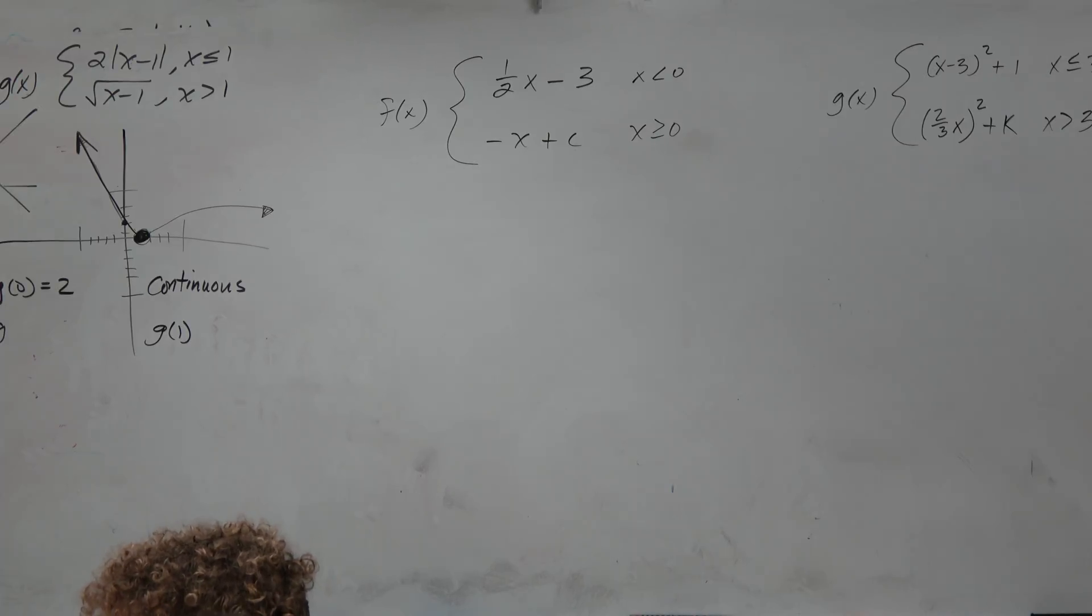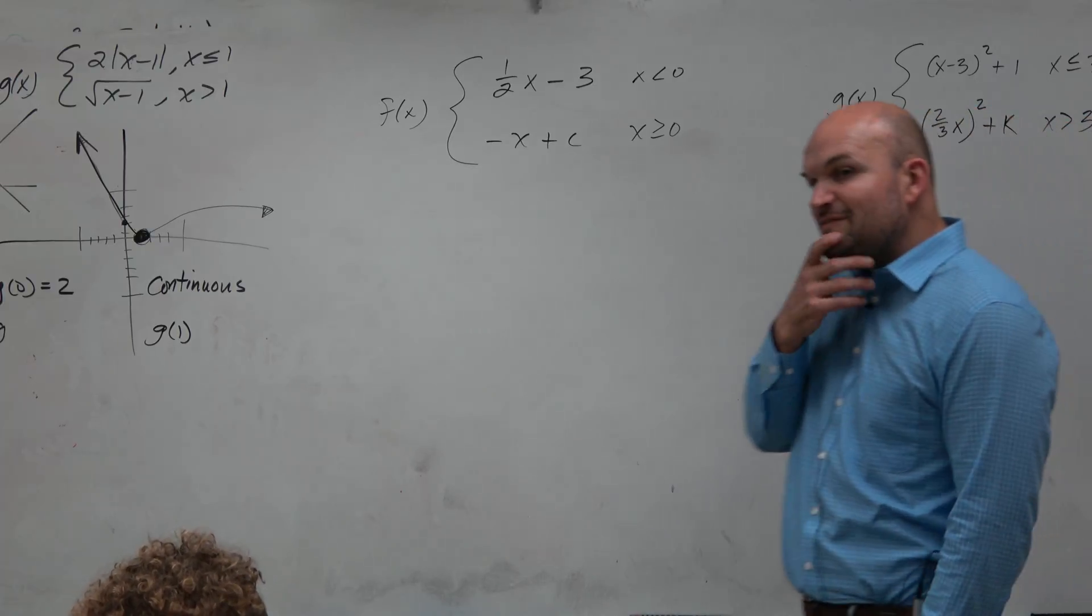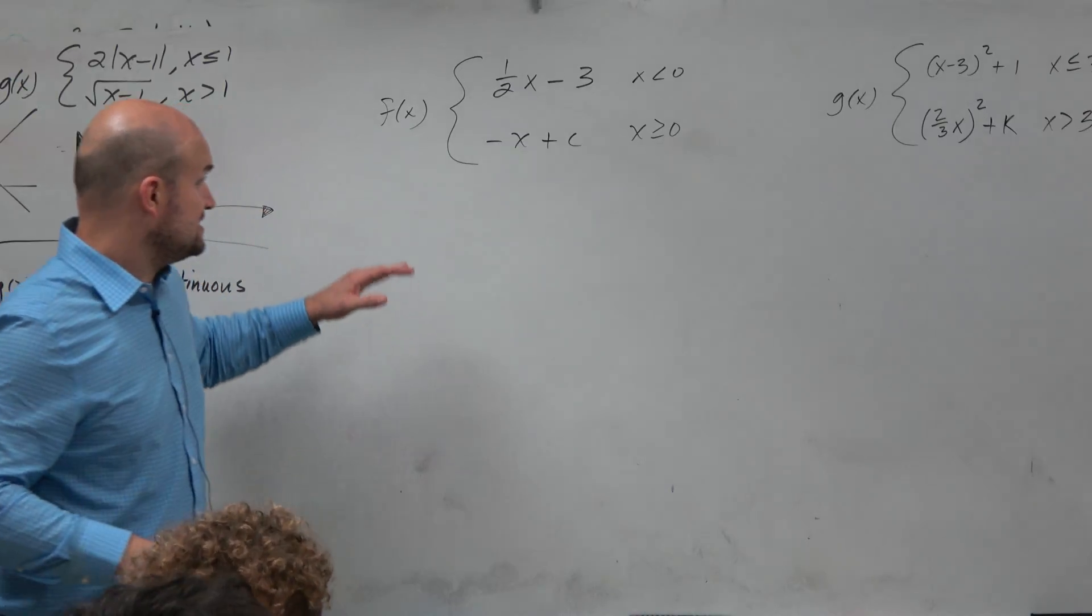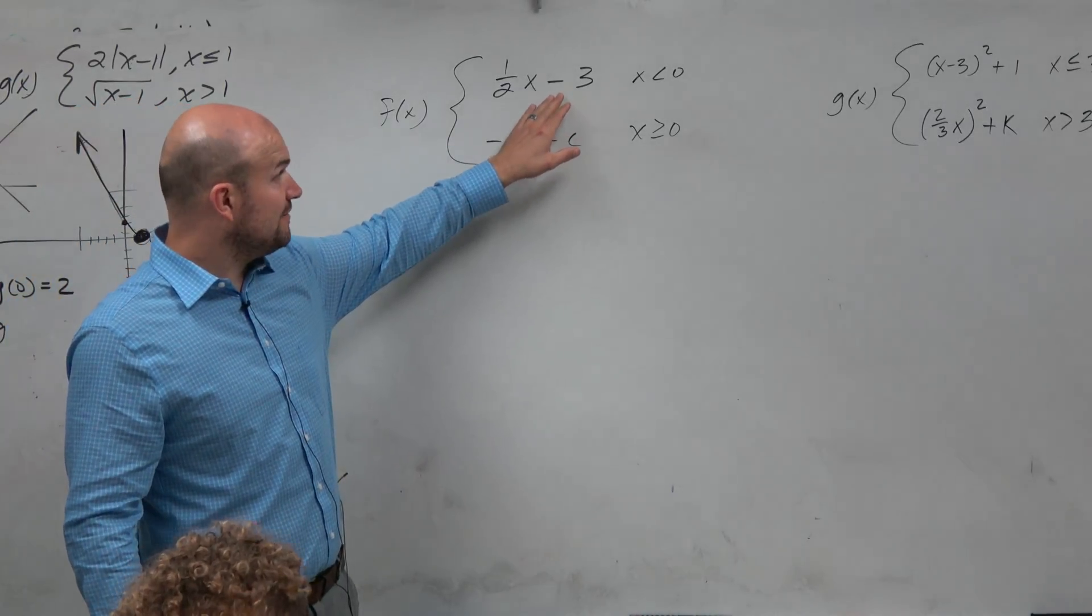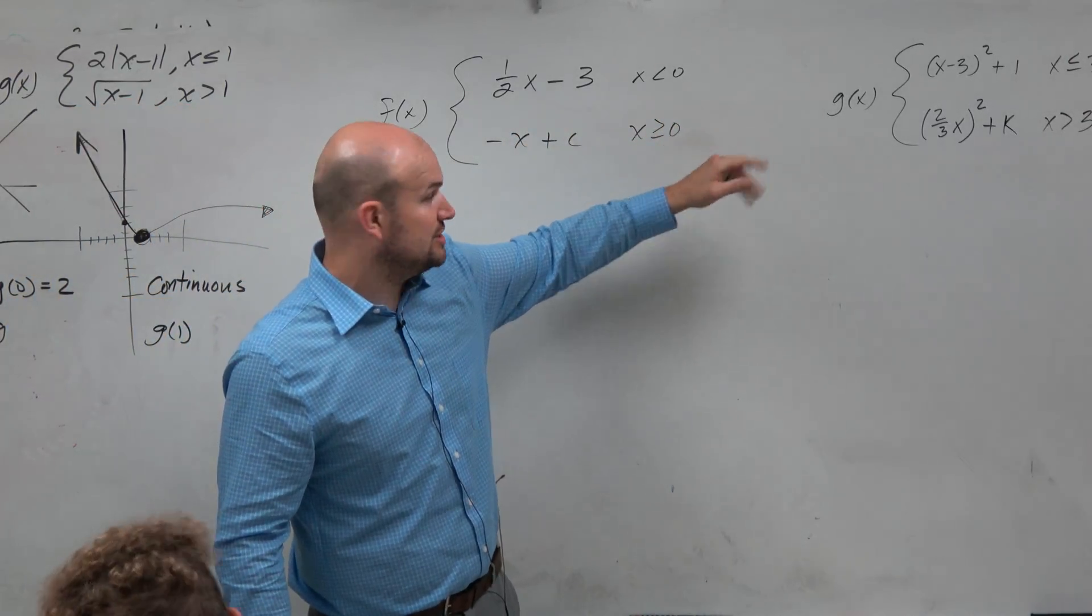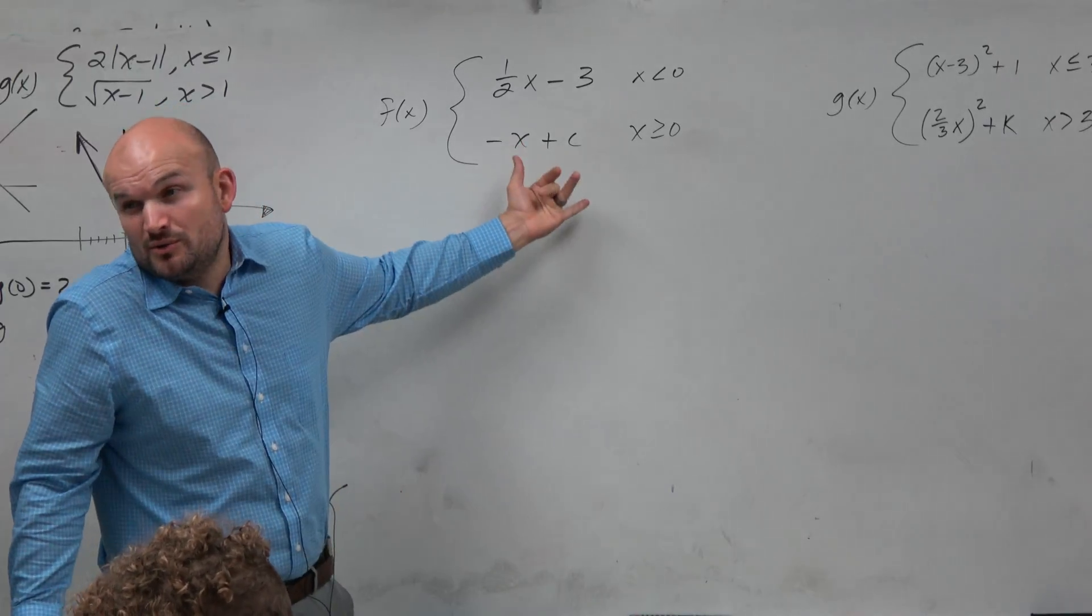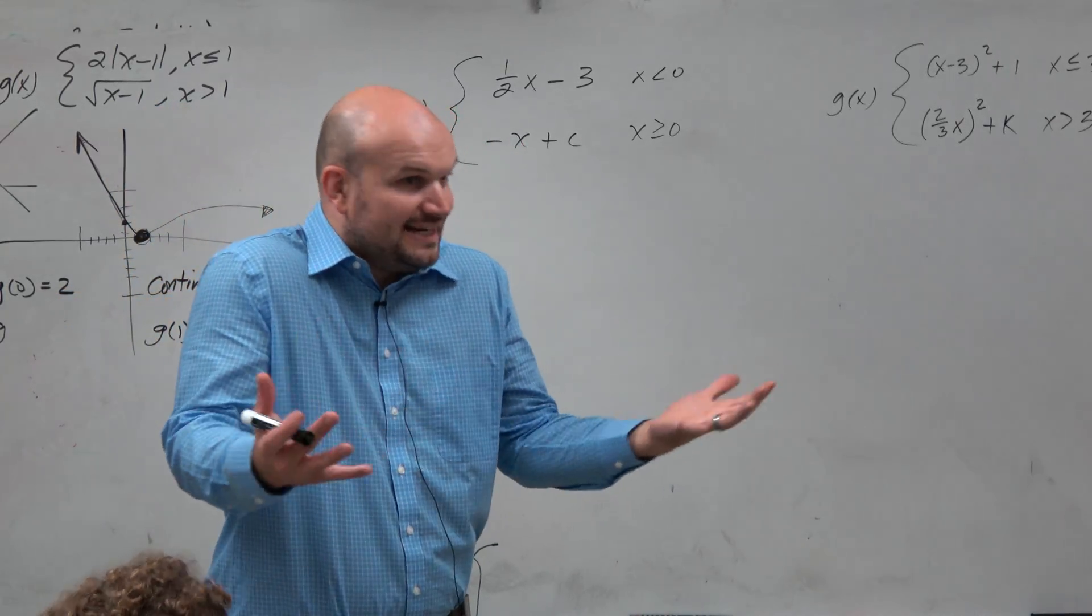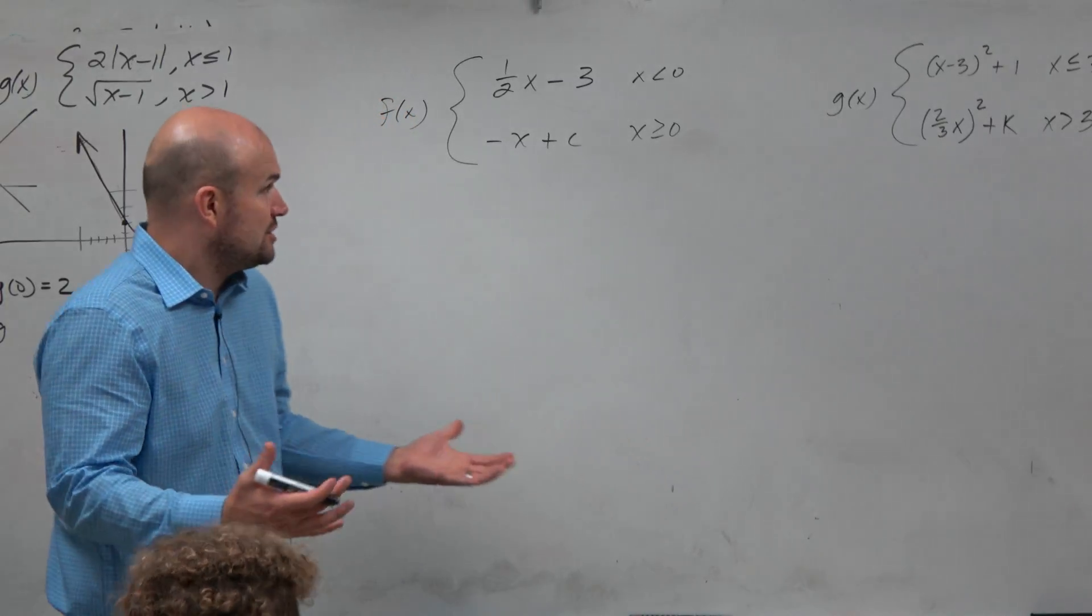Before we do that, it's really important that we understand the question. Find the value that makes the function continuous. If you look at this, you can see that we have a function defined with a domain restriction. We have another function, though we don't know what this value c is. So c is going to represent a constant, any real number that we can determine.